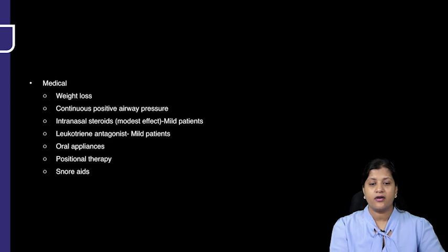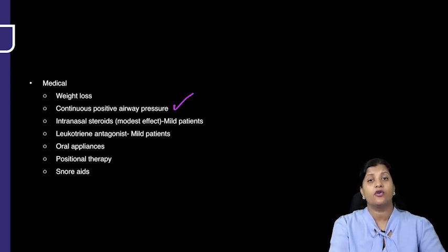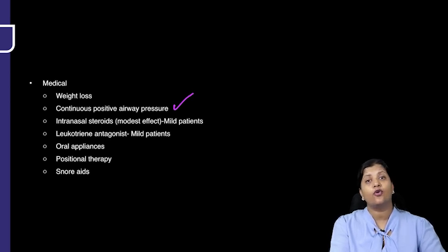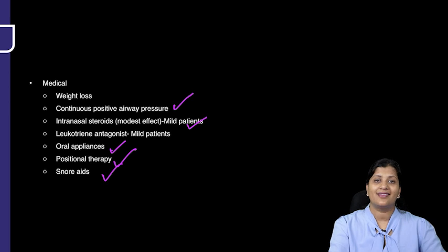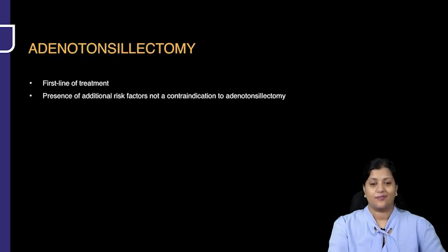Medical therapies include weight loss, which is absolutely important. CPAP is used if there is failure even after doing a tonsillectomy or adenoidectomy. Children with neuromuscular diseases can go preliminarily with CPAP. Intranasal steroids can help in patients with allergic rhinitis or sinusitis. Oral appliances, positional therapy, and snoring aids form some of the medical management for patients with OSA.